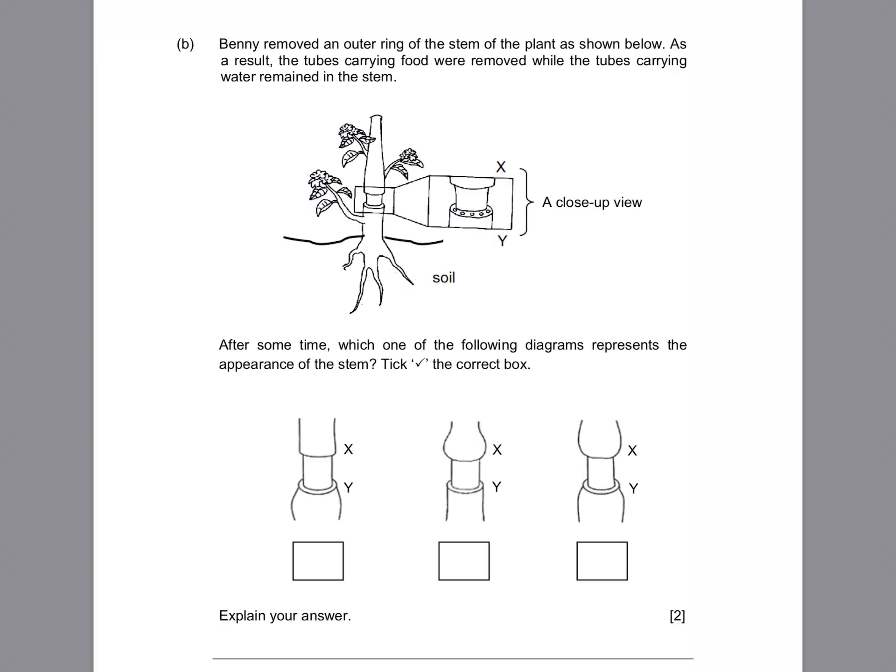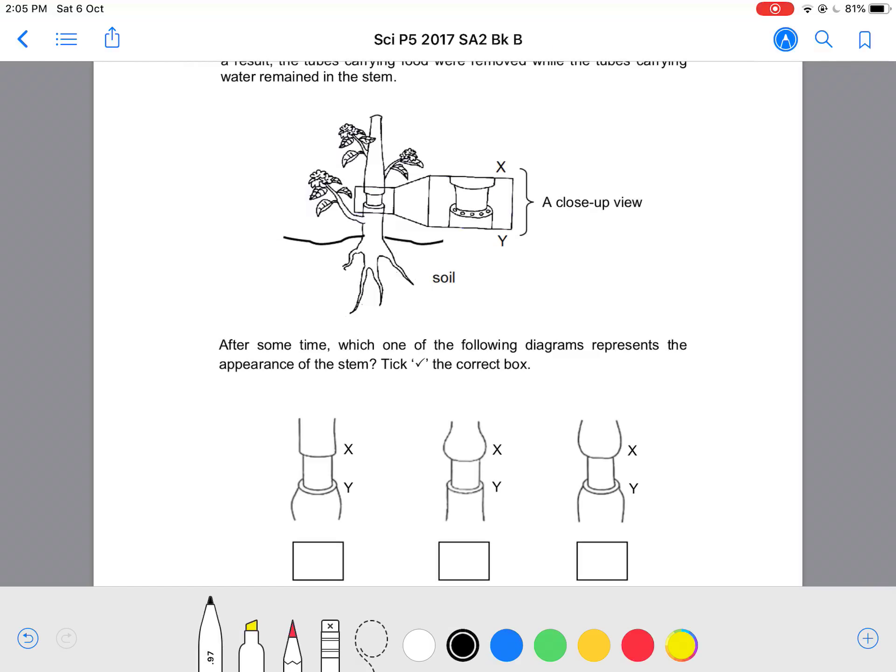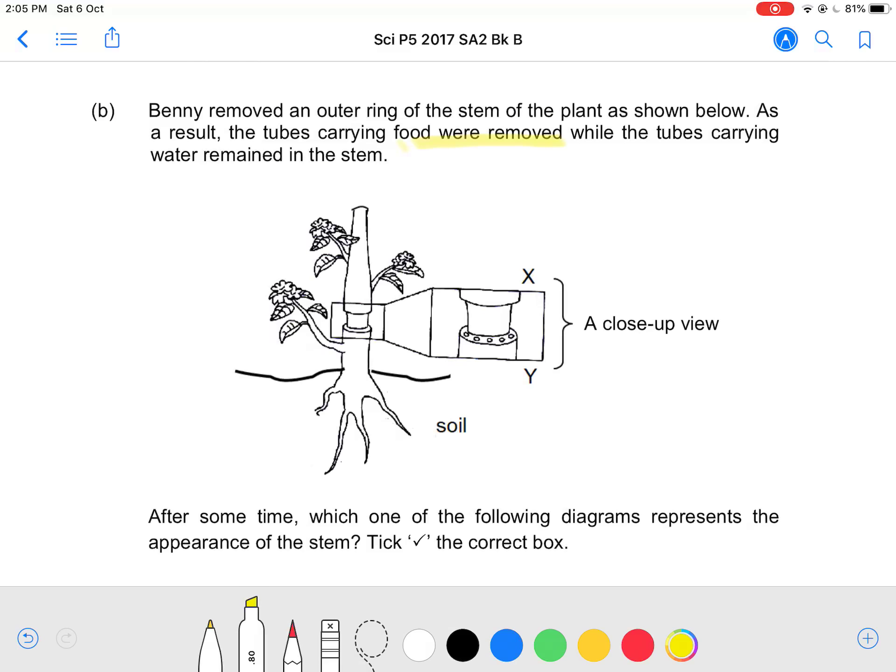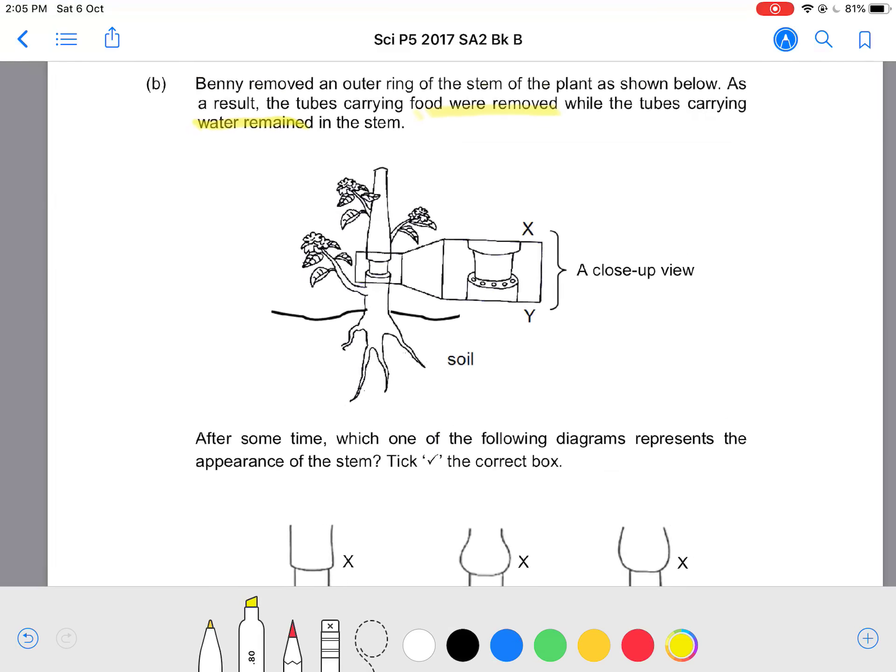Okay, so in this part 2 of the open-ended, we're going to continue from where we left in a previous video. At part B on Benny, Benny removed an outer ring of the stem. As a result, the tubes that carry food were actually removed and the tubes for water remained. So only the food was affected.